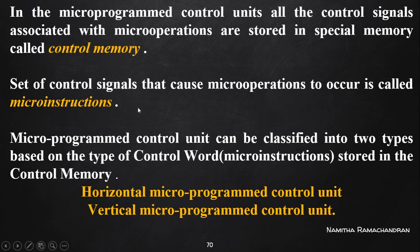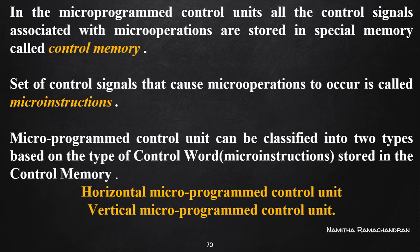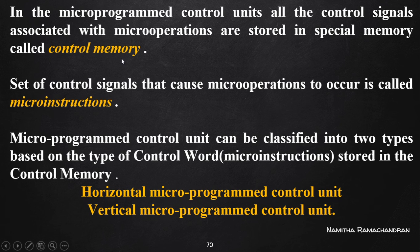Using micro instructions we can control the activities of a system. Different micro instructions generate different control signals for controlling the activities of the processor, memory, internal bus structures, and for storing and fetching data from registers. All these activities are controlled based on micro instructions, which are stored in a special ROM type memory called control memory.